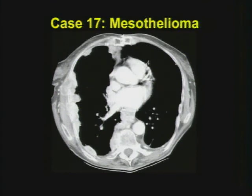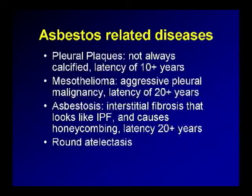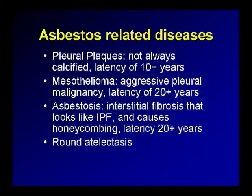Case seventeen: mesothelioma with invasive chest wall mass — not a difficult finding. Note the presence of calcified plaque, suggesting a history of asbestos exposure. The occupations besides working in a shipyard: pipe fitters, people who work in old buildings, people who worked with brake pads in the 60s and 70s, which contained asbestos for heat-absorbing characteristics. A few different types of asbestos-related diseases: pleural plaques — sometimes calcified, sometimes not — have a shorter latency than malignancy. Asbestosis is different from asbestos-related pleural disease — it looks for all the world like interstitial fibrosis, very hard to separate from IPF except with exposure history. Look for honeycombing and calcified plaques. You can also get rounded atelectasis.